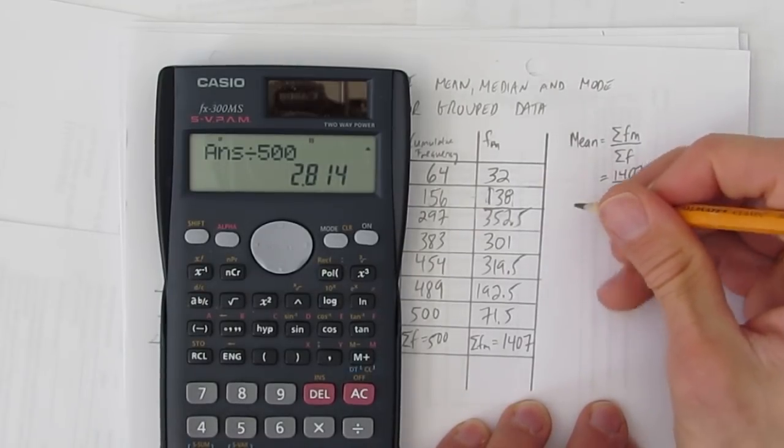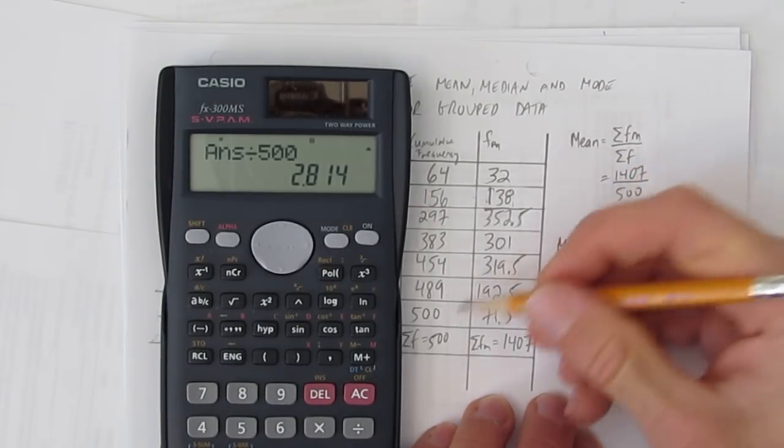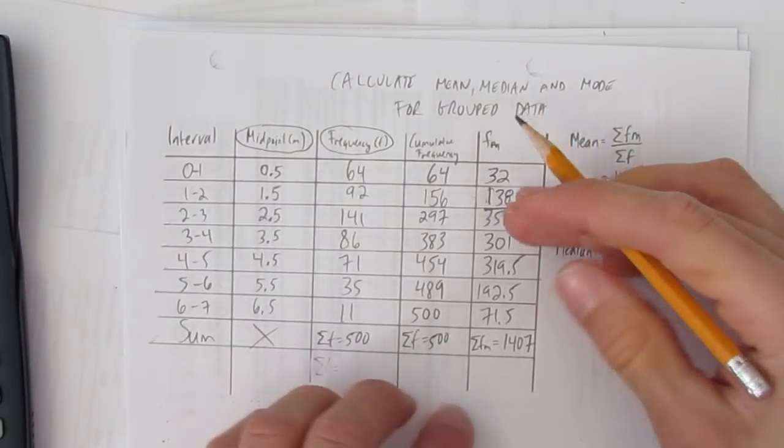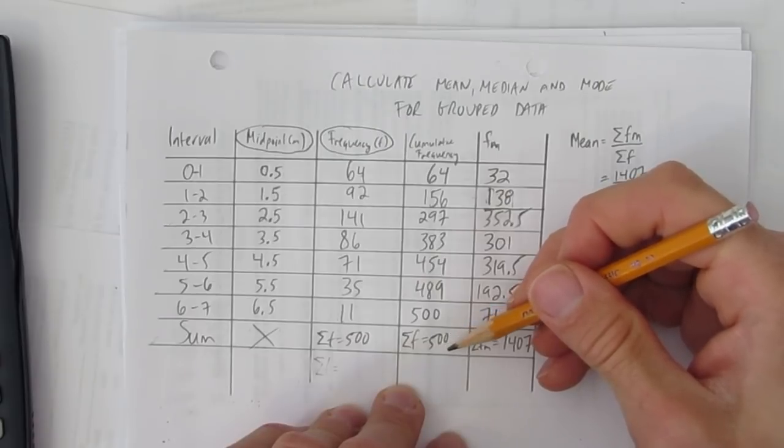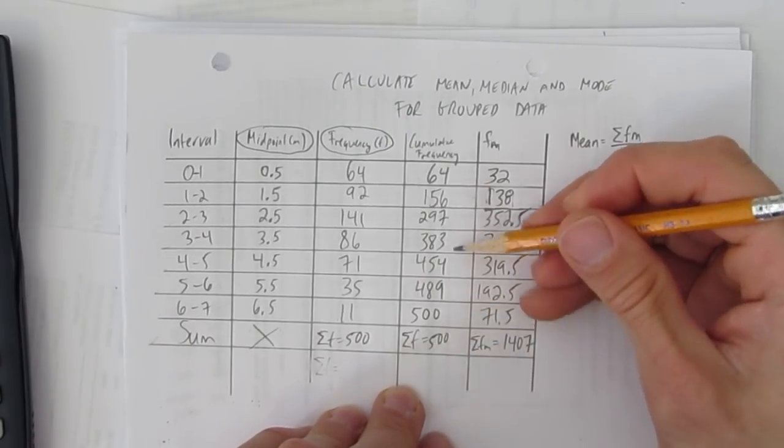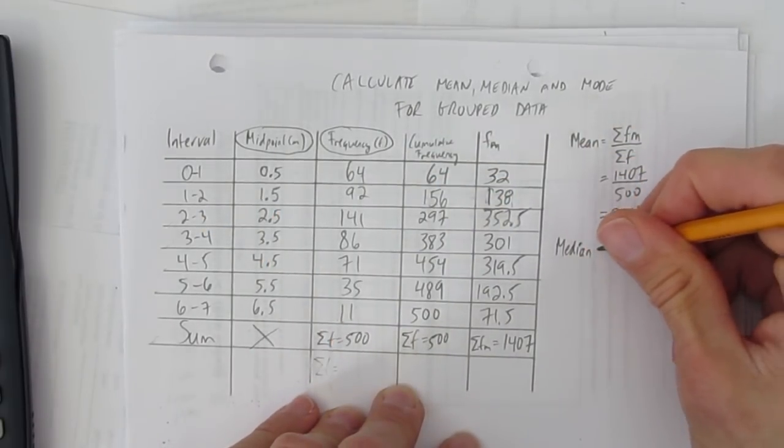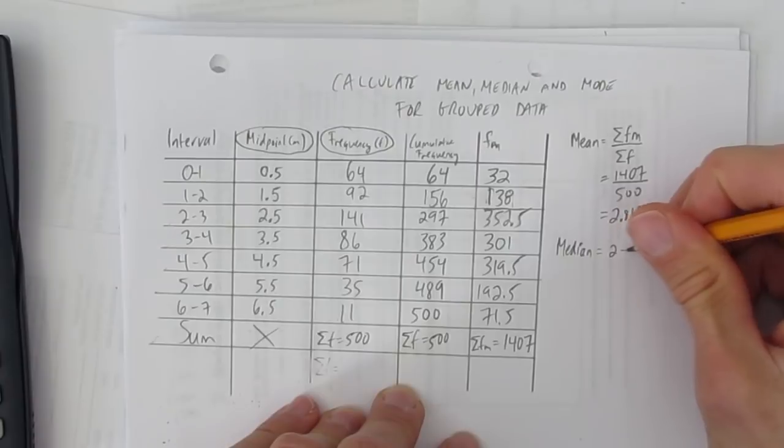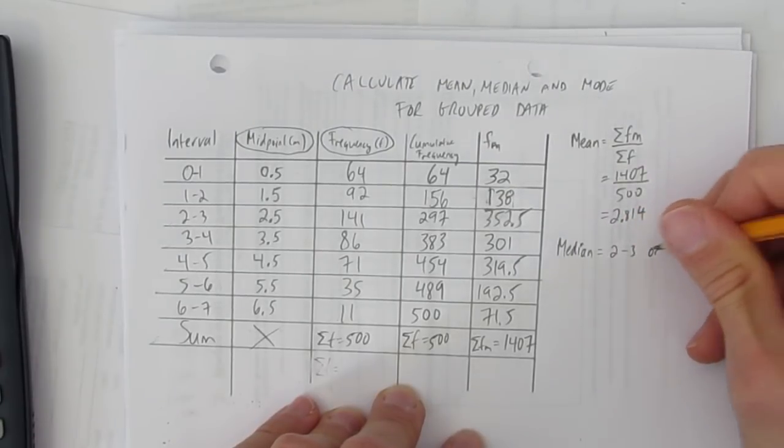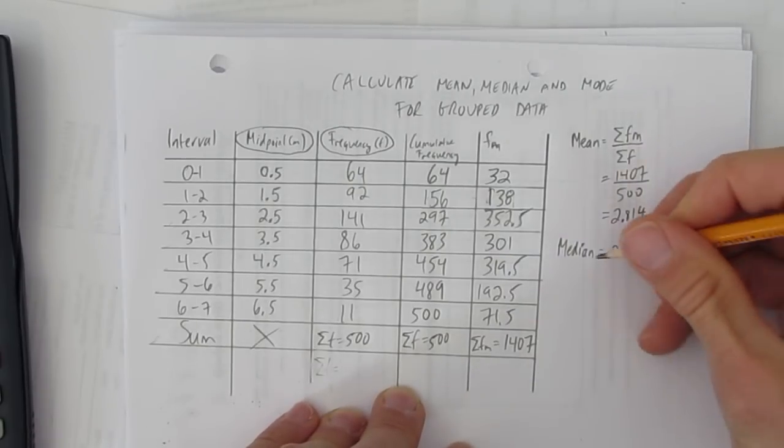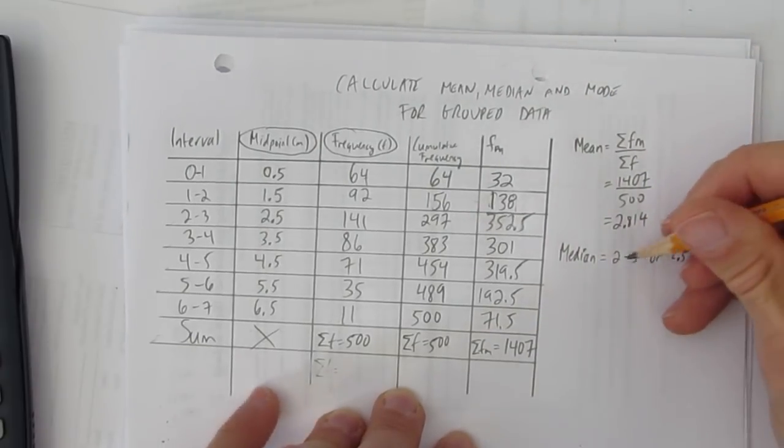But we also want to know the median. The median is just the middle number. And we know there are 500 items. So the middle number would be adding together the 250th and the 251st thing. But both of those occur in this interval here. So we say the median is 2 to 3. Or, if you want, we can use the midpoint, 2.5. Either one is usually acceptable as what's the median. The middle number is 2.5. Or you could say the median is the interval 2 to 3.